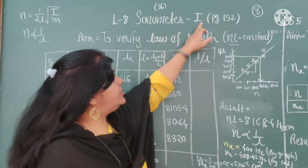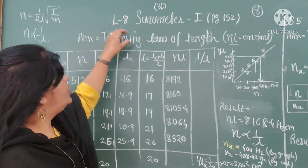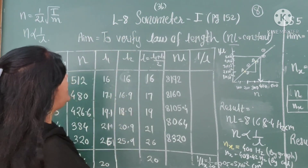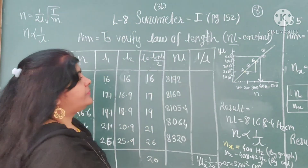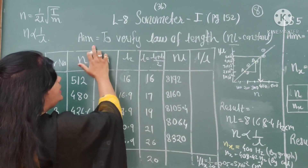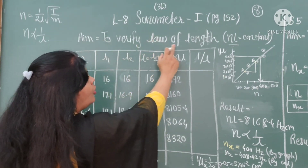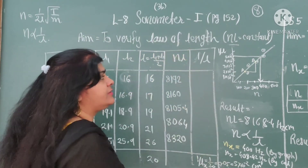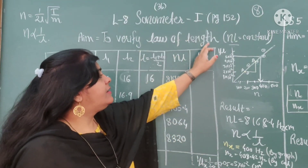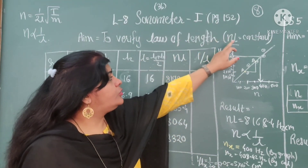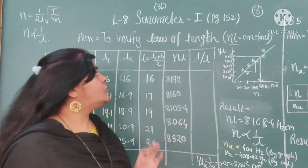On page number 152, it is given as a bold step — that one sentence you write as the aim. The aim is: to verify the law of length. If you write this aim, it means you have to show that NL is equal to constant.